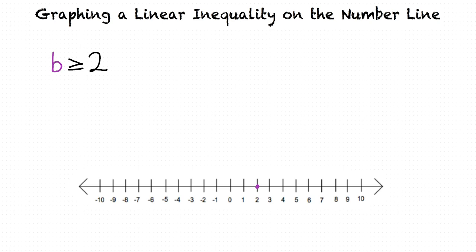Next, since b can take all values greater than 2, we highlight all values on the number line that are greater than 2. Awesome. You got it.